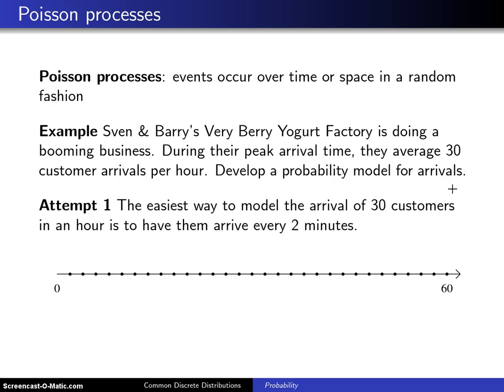We are going to make three different attempts at a model starting with the very simplest and then making it slightly more sophisticated going forward. Here is attempt number one and this is the easiest way to model an arrival process with 30 customers per hour and that is just have them arrive every two minutes.